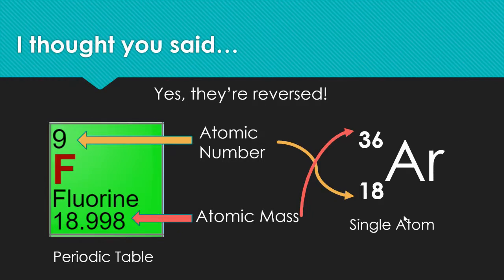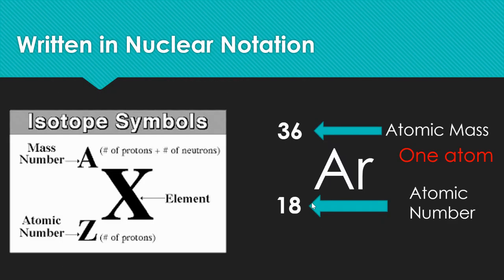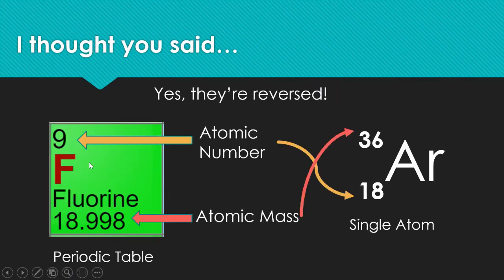You might notice: in nuclear notation the mass number goes on top and the atomic number on bottom, but on the periodic table it's reversed — the atomic number is on top and the mass is on the bottom. In nuclear notation, the bigger number (mass) is on top and the smaller number (protons) is on the bottom, and on the periodic table they're swapped.